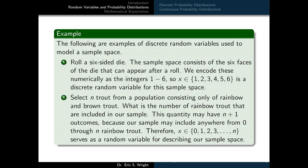Alternatively, we could imagine selecting n trout from a population of only rainbow and brown trout. If we ask what's the number of rainbow trout included in our sample, this quantity may have n+1 outcomes, since our sample may include anywhere from zero through n rainbow trout. Therefore X belongs to the set {0, 1, 2, 3, ..., n}, which serves as a random variable for describing our sample space.